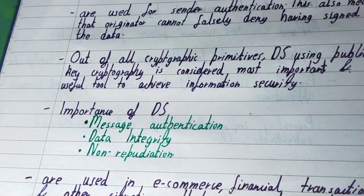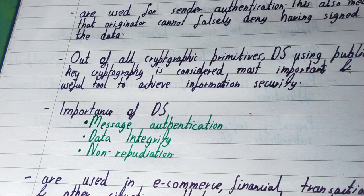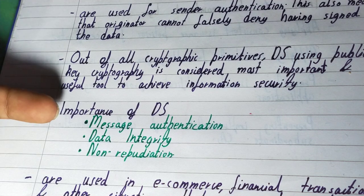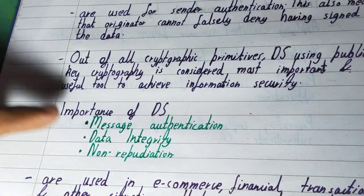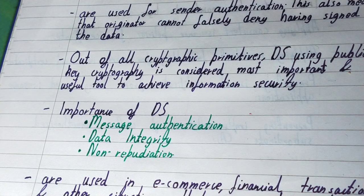Now let's talk about the importance of digital signatures. First is message authentication — whatever message is sent online from a sender to a receiver should not be eavesdropped on or read by anyone else. Only the sender and the receiver should be able to read that data. Second is data integrity — no one other than the sender can modify the data when it is sent online.